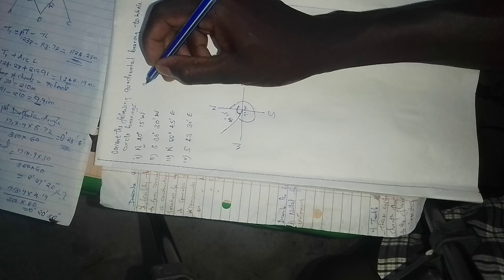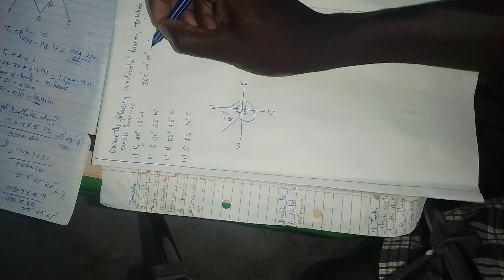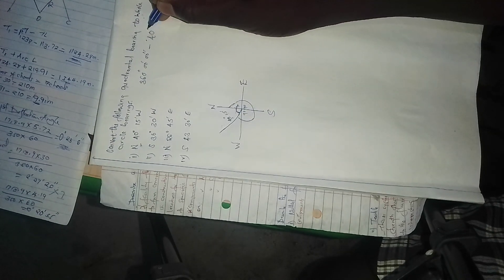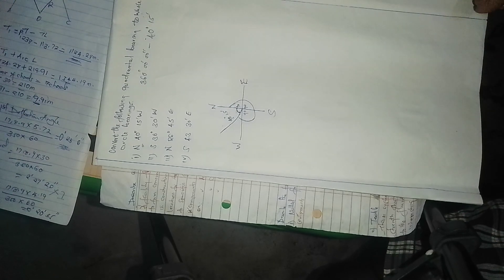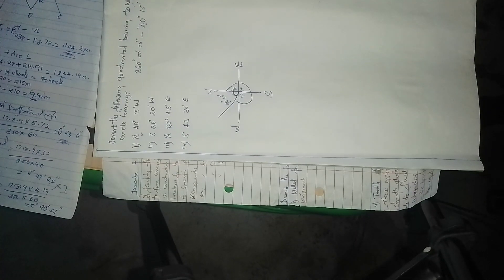So you can do 360 degrees zero minutes zero seconds minus the one we have, 40 degrees 15 minutes. We subtract using your calculator.